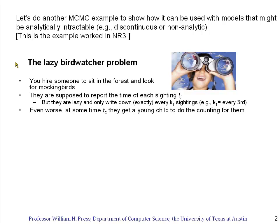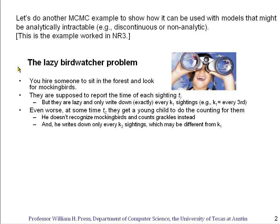Even worse, at some time t_c, they get a young child to do the counting for them and go off to the local tavern. This child doesn't recognize mockingbirds and counts grackles instead. Furthermore, the child writes down only every k2 sightings, which might be different from k1 — perhaps k2 equals 2, writing down every other sighting.